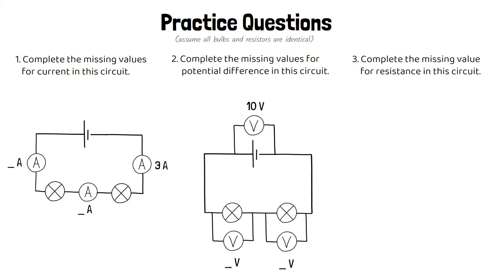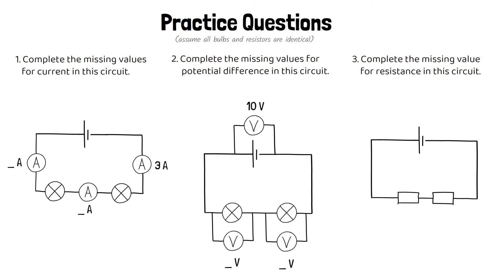And finally, complete the missing value for resistance in this circuit. The circuit has two resistors and they each have a resistance of four ohms. What will be the resistance of the circuit overall? Pause the video and have a go at these questions.